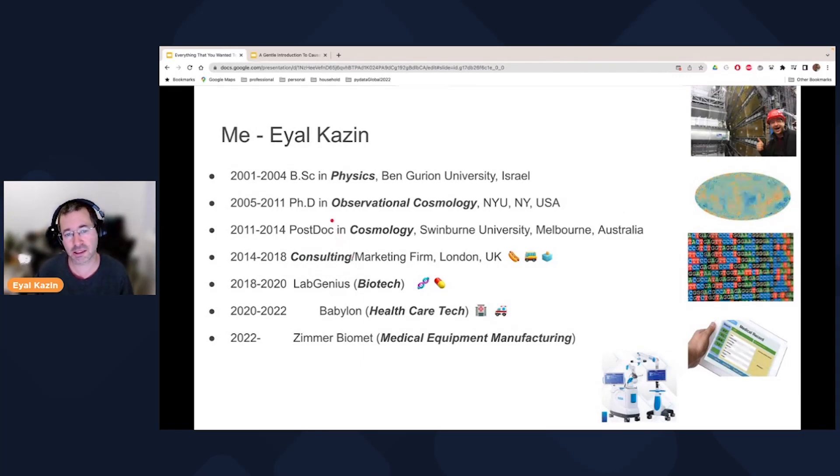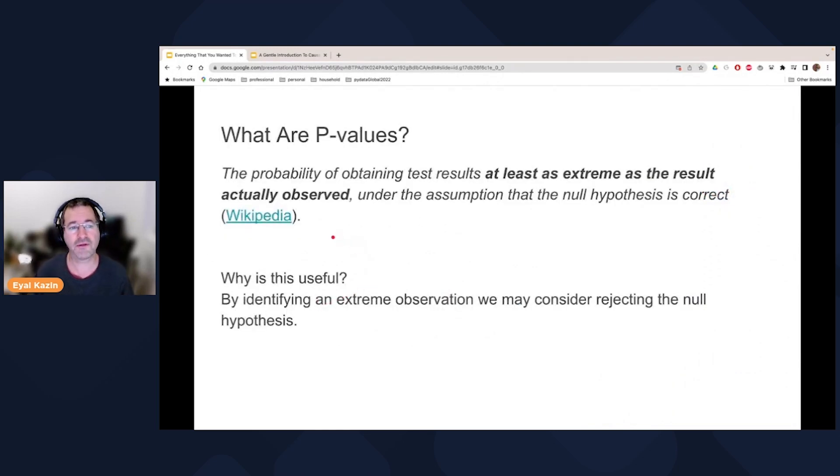A bit about me, I've been doing data analysis for over 15 years now, started off as an astronomer and most recently in the health sector. So p-values are a way of quantifying how extreme your observed data is, considering your underlying null hypothesis. And this is useful because you could potentially use this to reject a null hypothesis if you think that your data is too extreme compared to that null hypothesis.